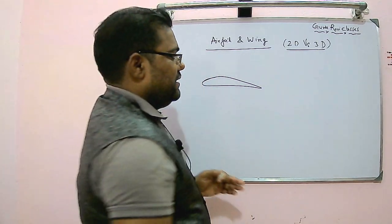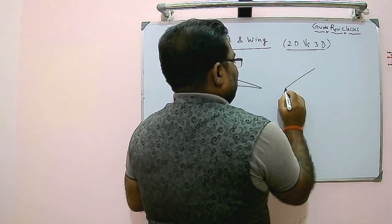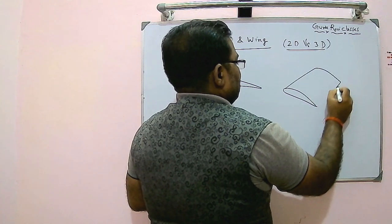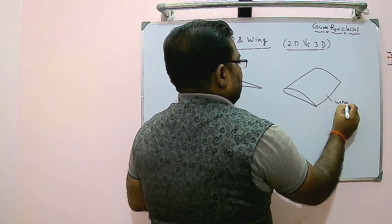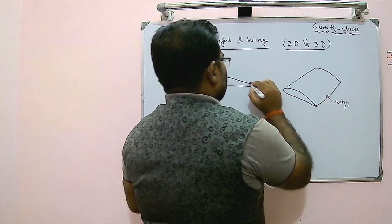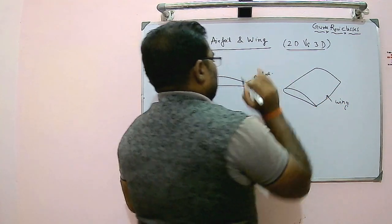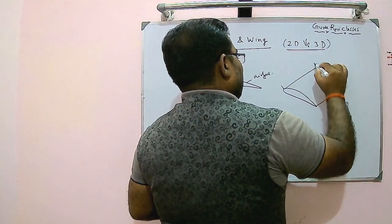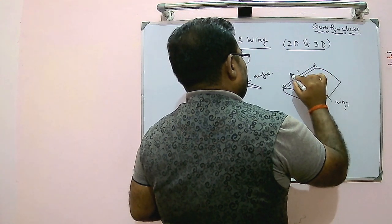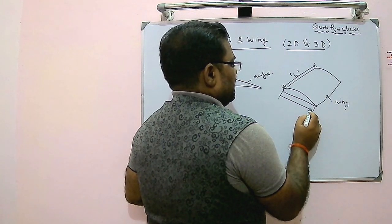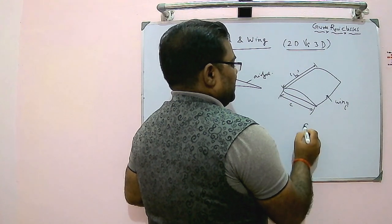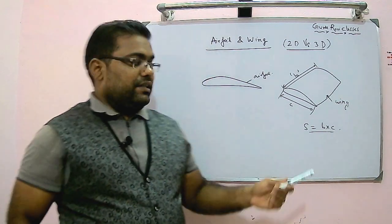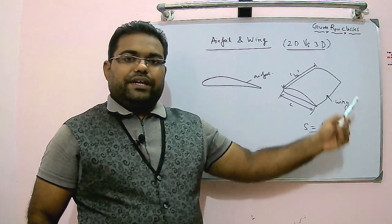When we talk about the wing, the wing will have a certain wingspan, and the cross-section of the wing will also be an airfoil. The wing has a certain wingspan denoted by b, and this is known as chord length denoted by c. The surface area — the wing plan form area — can be calculated as b times c for a rectangular wing.